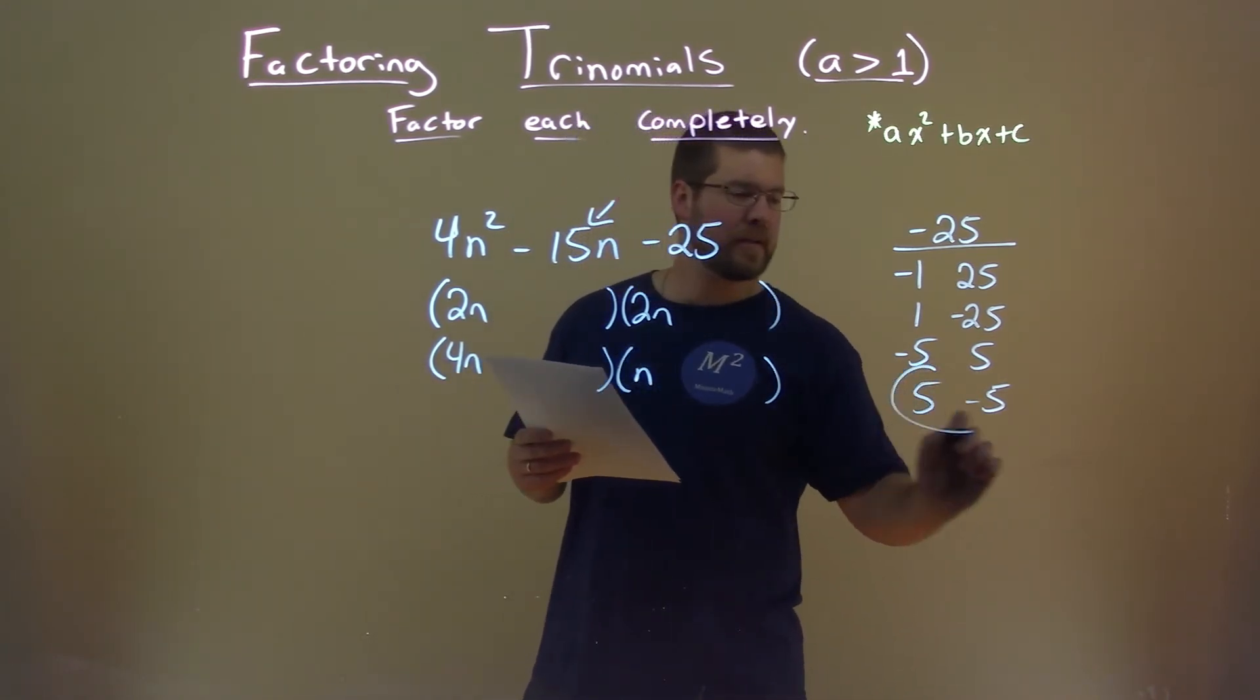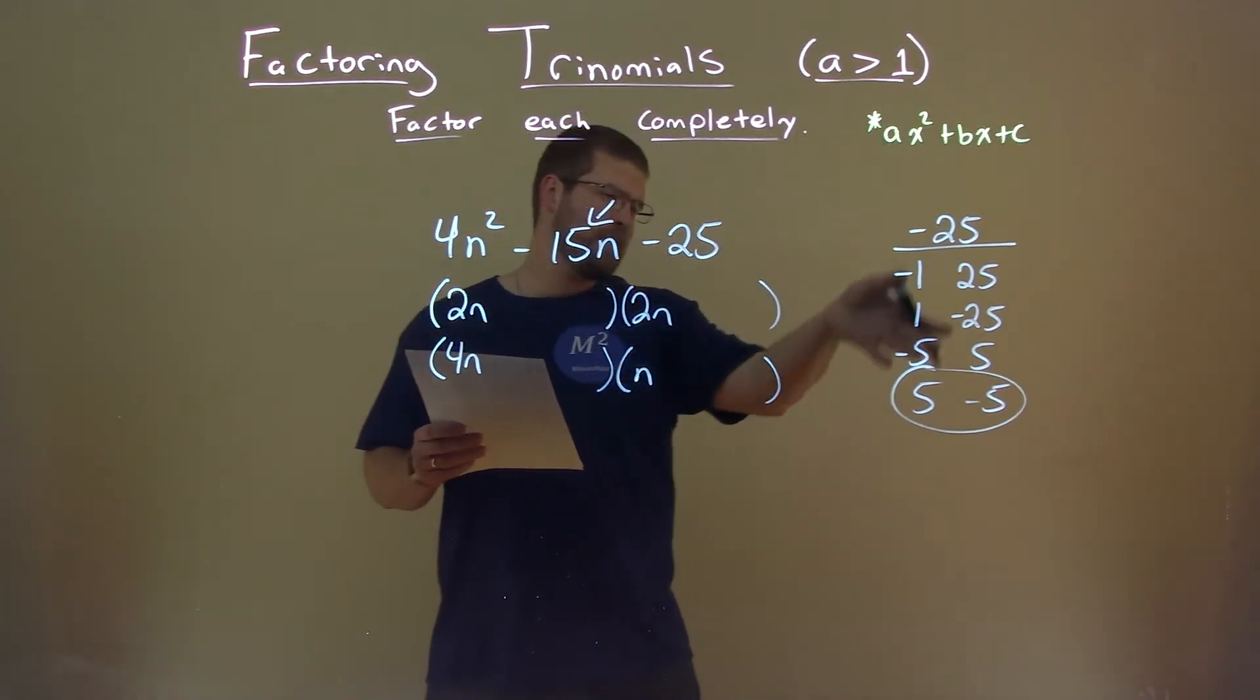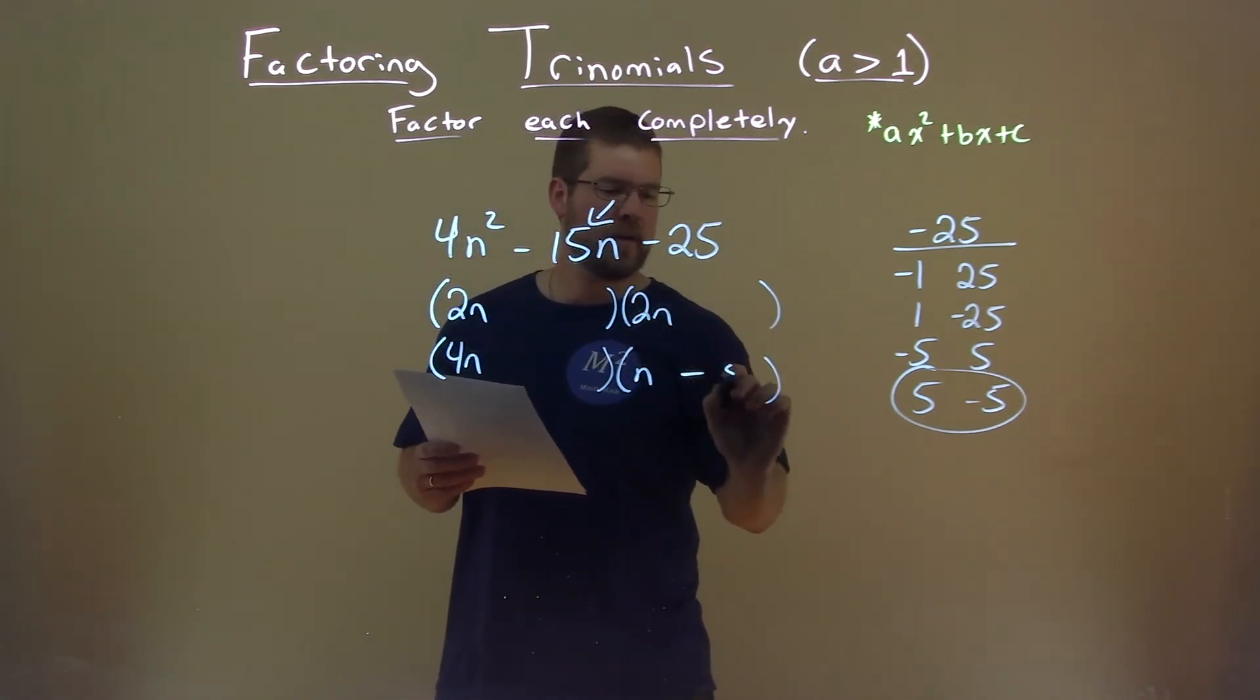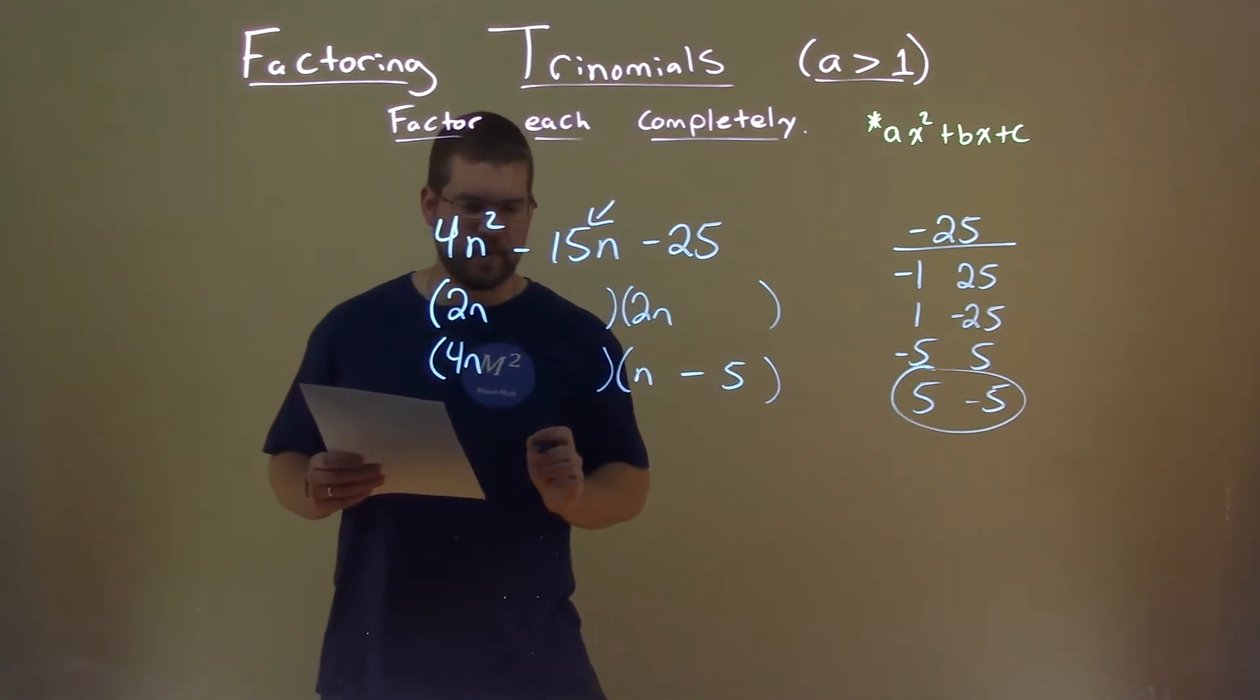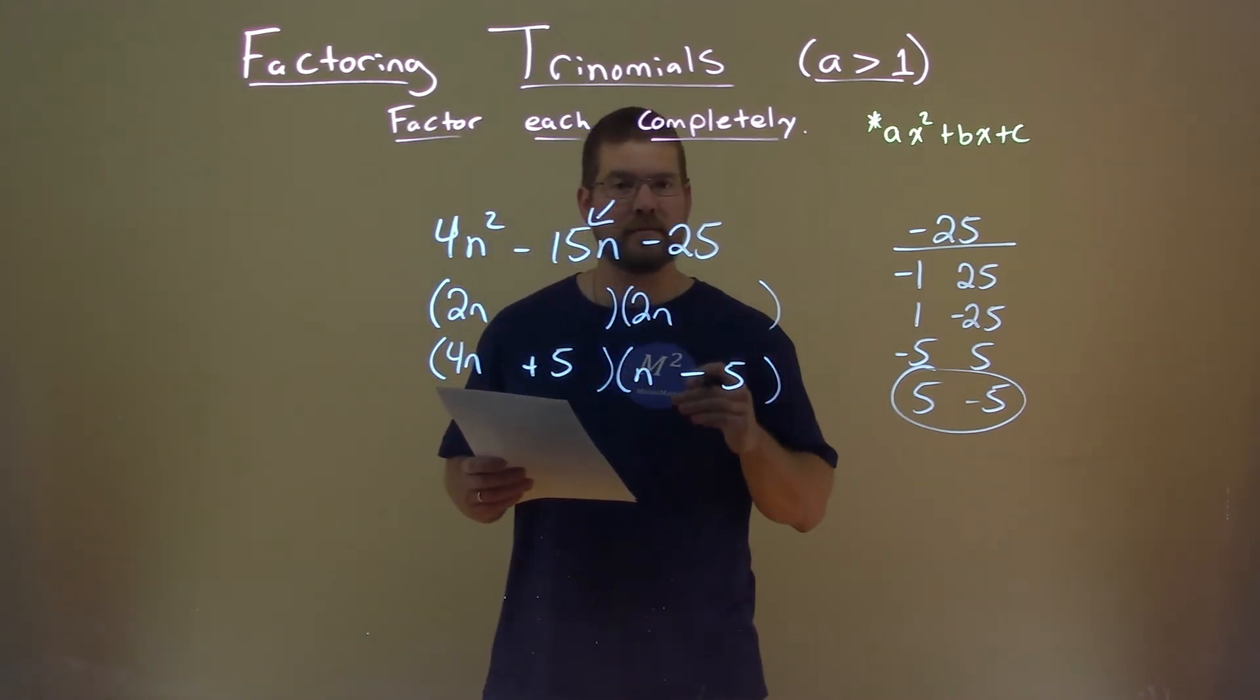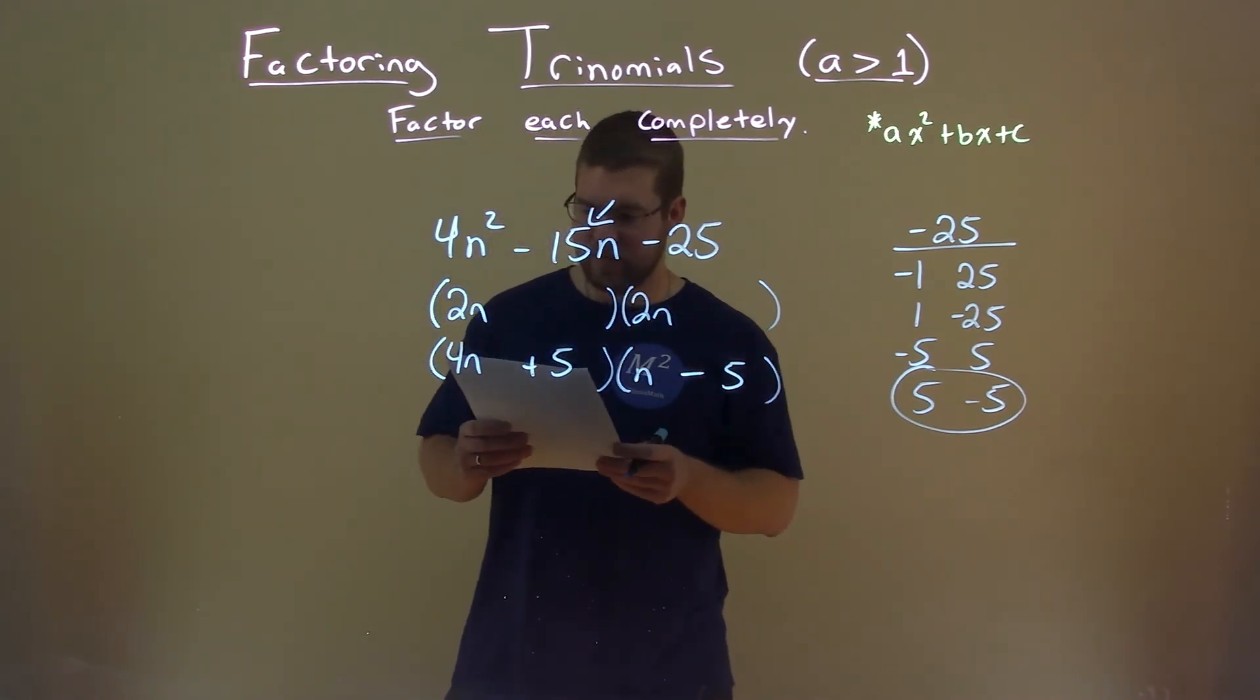With practice, that's kind of our goal here. With practice, you can guesstimate which one's the best choice. So 4n times negative 5 is negative 20n, and if we put a positive 5 right here, 5 times n is 5n, so negative 20 plus 5n gets us negative 15n.